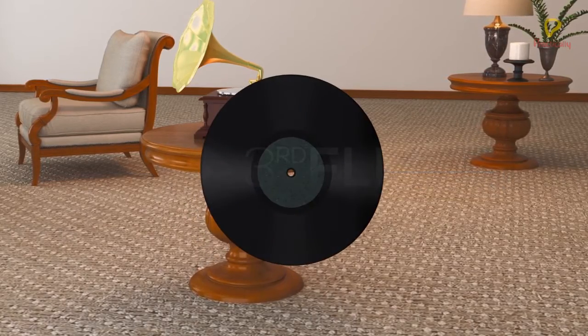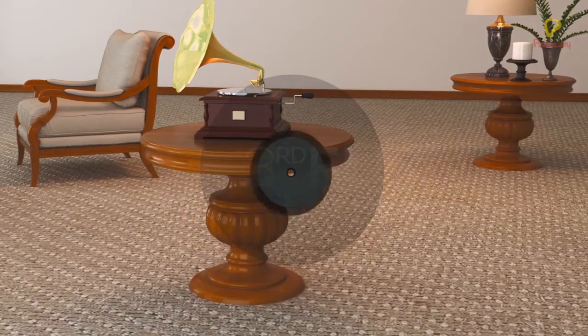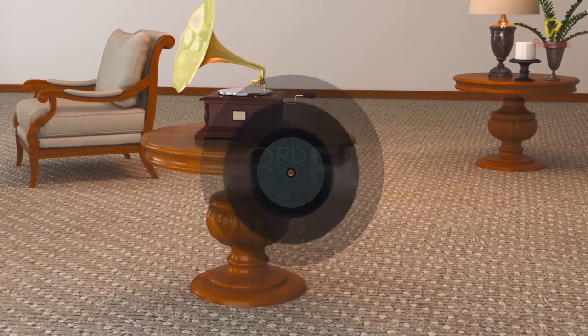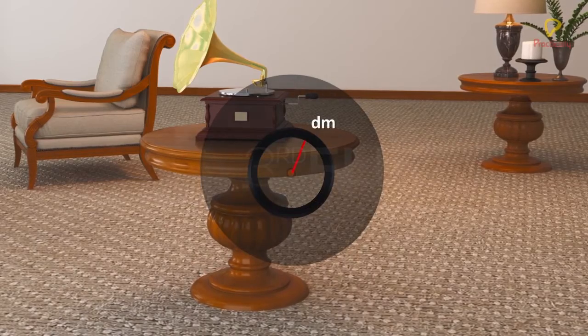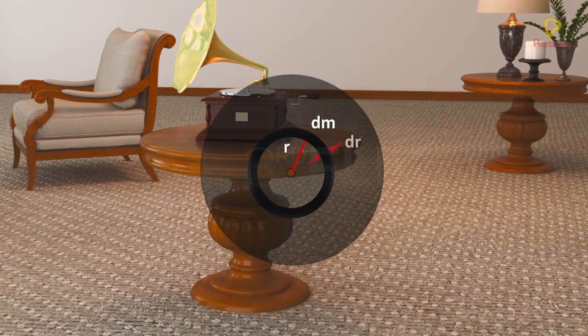The disc can be assumed to be the collection of several concentric rings of infinitesimally small thickness. Consider one such ring element of mass dm, radius r, and thickness dr.